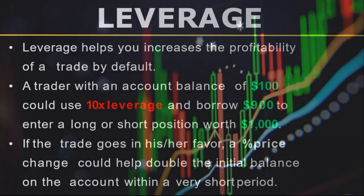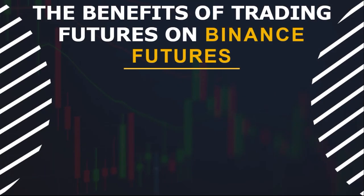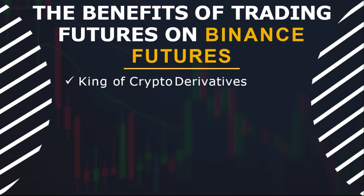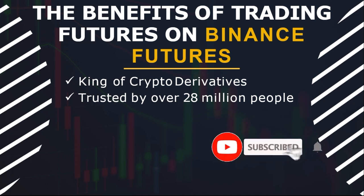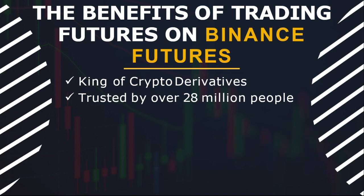There are a lot of benefits of trading with Binance, but here are the few I want to highlight. Number one: when it comes to trading crypto derivatives, Binance is the king of crypto derivatives. Binance is presently trusted by over 28 million active users — people who use the Binance exchange regularly for trading, buying, selling, and building their portfolio. That is why it is the king: it has the highest number of users when it comes to crypto trading and investing.